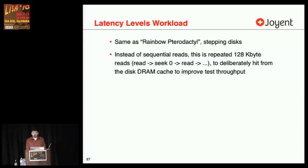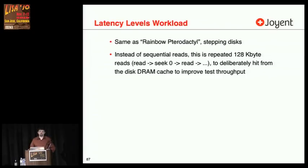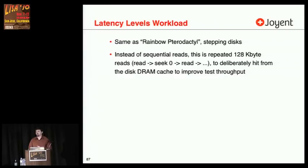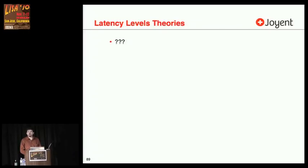The same workload as the rainbow pterodactyl but stepping up disks one by one with repeated 128-kilobyte reads — read, seek zero, read, seek zero — to deliberately drive the disk to maximum throughput possible, repeatedly reading from cache. That's the heat map. Instead of a rainbow pterodactyl, now you get various latency levels which appear and disappear over time. I have no idea why. Heat maps are discovering a lot of things that we don't understand, and understanding them helps us understand latency, which is crucial for understanding application performance.